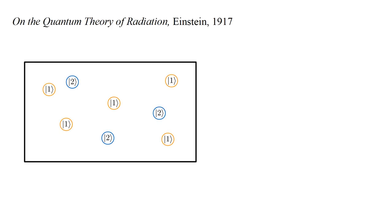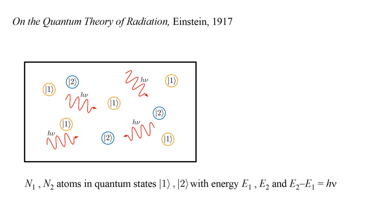Imagine a box containing a number of atoms, with each atom in either quantum state one, or the higher energy quantum state two. The box also contains photons, with a frequency nu corresponding to the energy difference of the two quantum states. There are N-one atoms in state one, and N-two atoms in state two, with respective energies E-one and E-two.